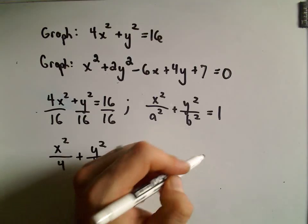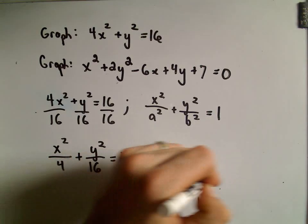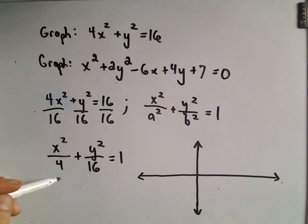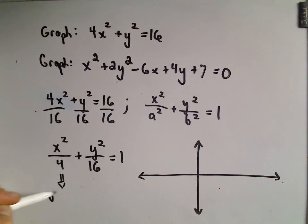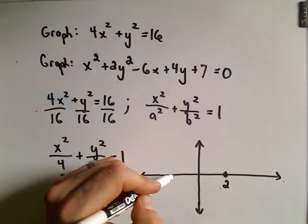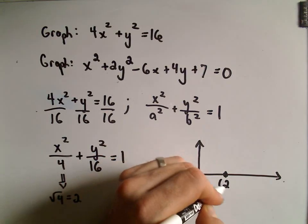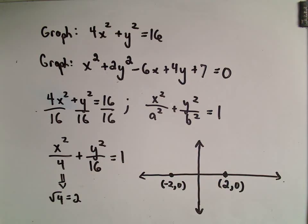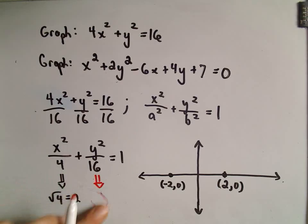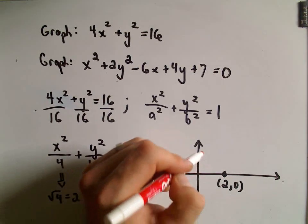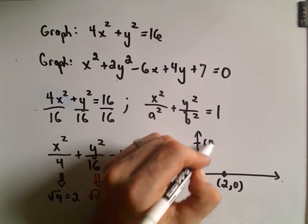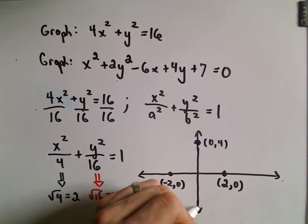Now we can pretty much graph everything. As discussed in the previous video, this is going to be an ellipse centered at (0, 0). If we take the square root of the number underneath the x part, the square root of 4 is 2 — that's how many units I move to the right and left of the center. Looking at the number underneath the y part, the square root of 16 is 4 — that's how many units we move up and down from the center. So we'll be at positive 4 and negative 4.